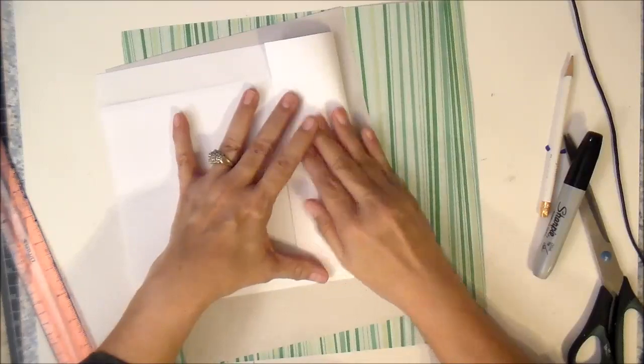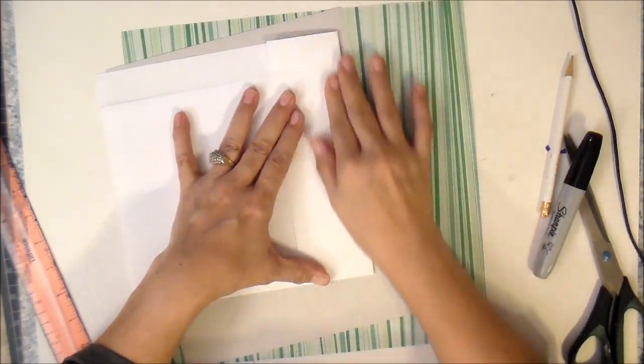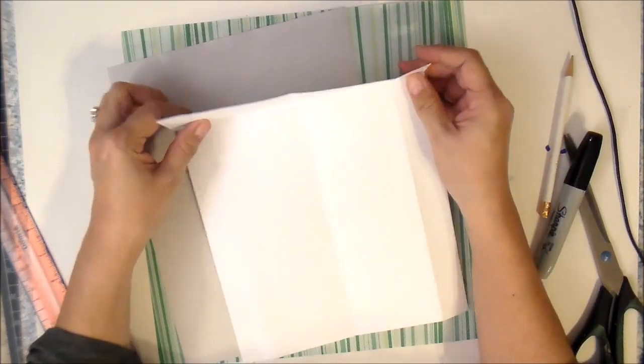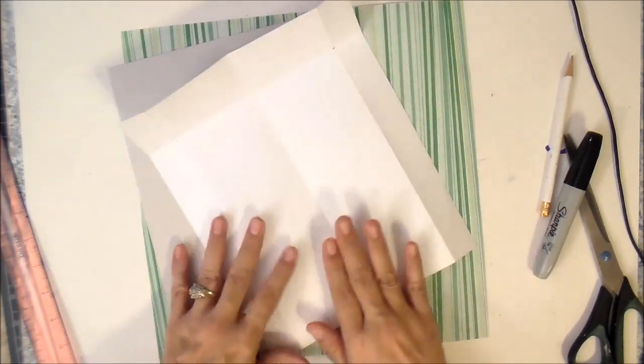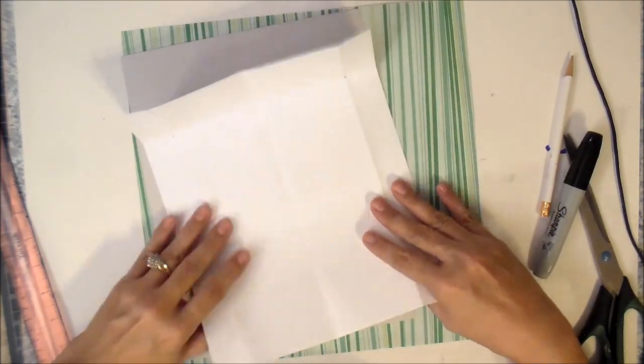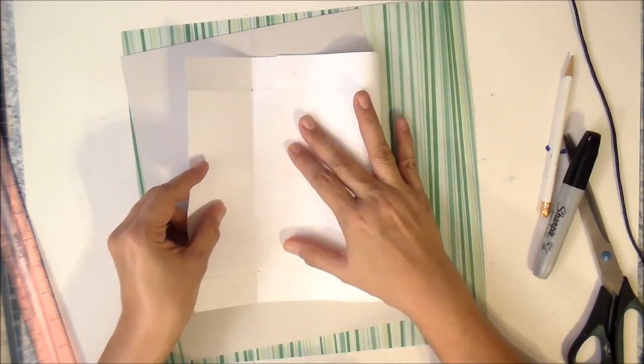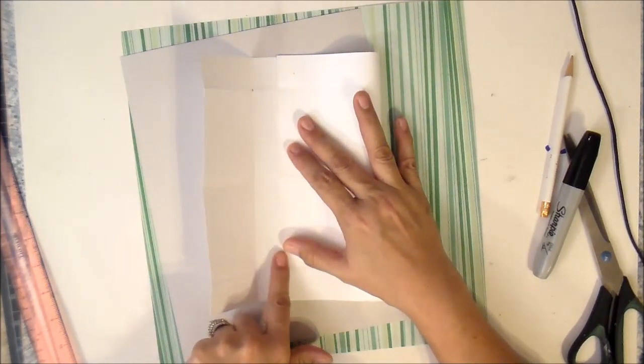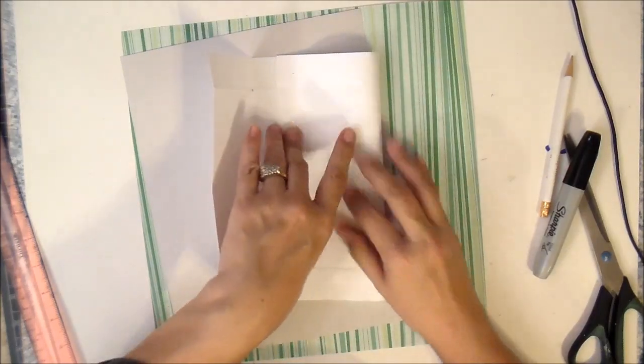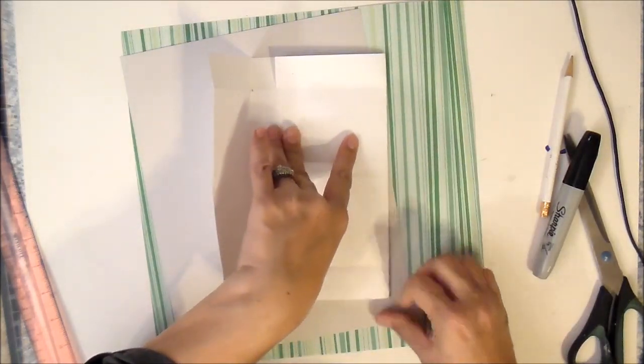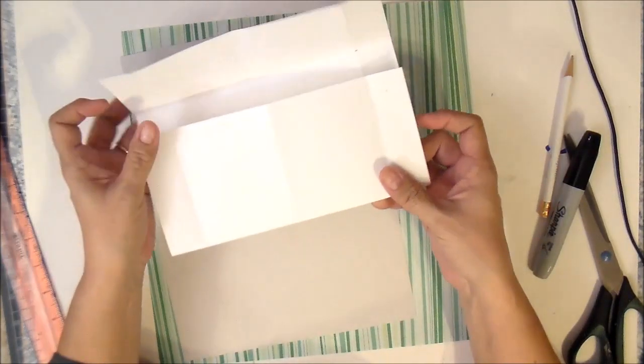That's about all the measuring you're gonna do. Now you have this. Now you're gonna bring this bottom part up and you're gonna fold it, but you're not gonna put it all the way up to the fold. You're gonna come back down about an inch, inch and a half, and fold it. So now you have this.